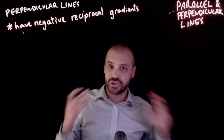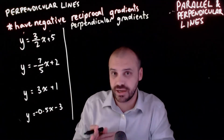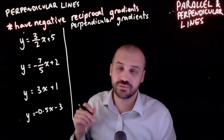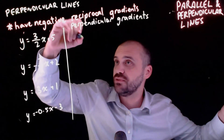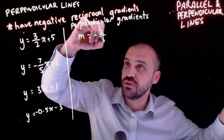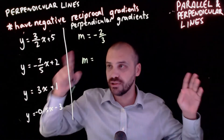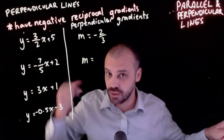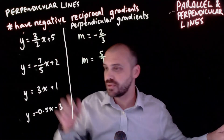The best way to show this is with a few examples - let's find the gradients of perpendicular lines. If there is a line y equals 3/2 x plus 5, a perpendicular line will have the negative reciprocal gradient: flip the fraction to get negative 2/3. For the next example, this gradient is negative already, so swapping the sign gives positive - and the reciprocal is 5/7.